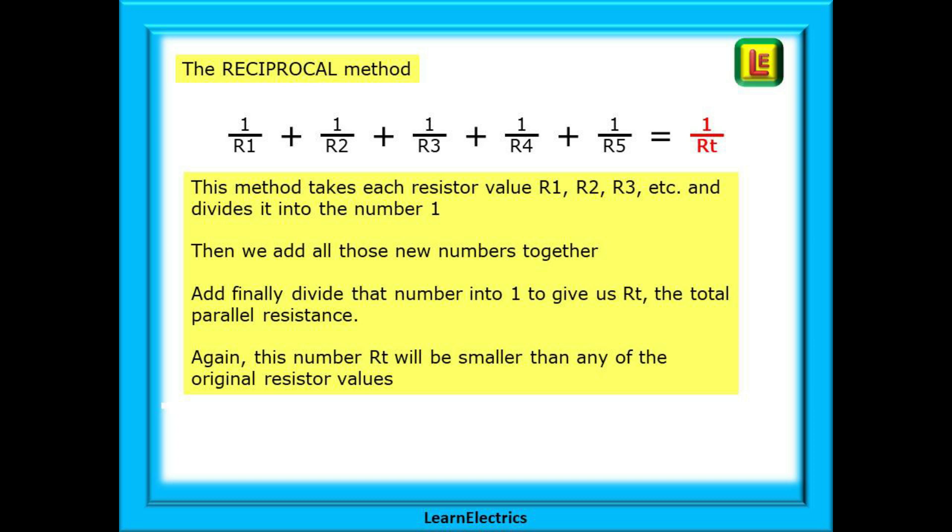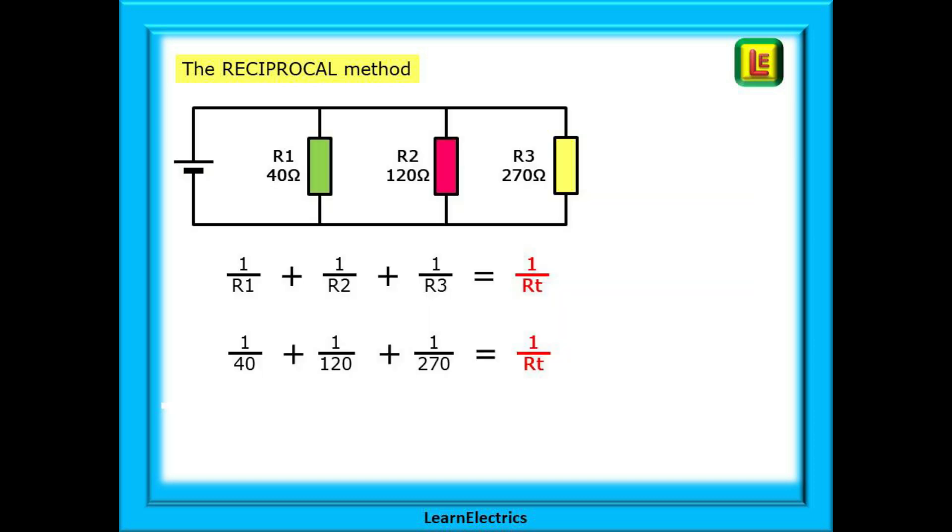This method takes each resistor value—R1, R2, R3, etc.—and divides it into the number 1. Then we add all those new numbers together and finally divide that new number into 1 to give us RT, the total parallel resistance. Again, this number will always be smaller than any of the original resistor values. We will use the same three resistor values as in the two previous examples, and we should get the same answer.